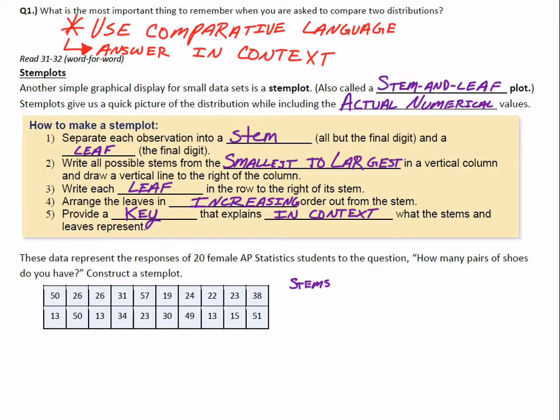My stems will go on the left-hand side, my leaves will go on the right-hand side. What kind of stems am I going to have here? Look at the biggest number and the smallest number in the data set.